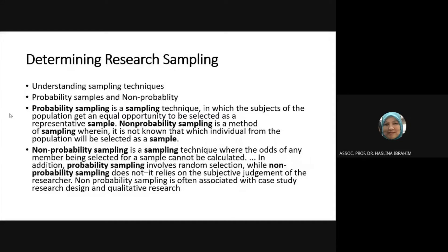For the definition of probability sampling: probability sampling is a sampling technique in which the subjects of the population get an equal opportunity to be selected as a representative sample.